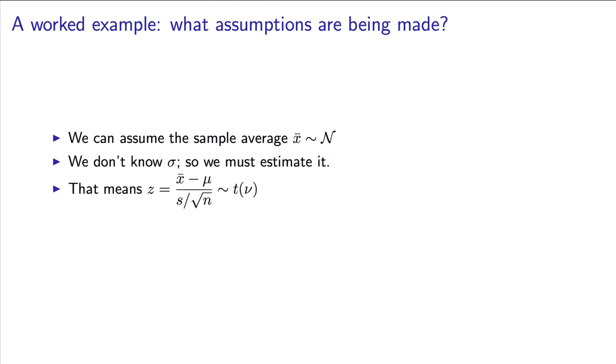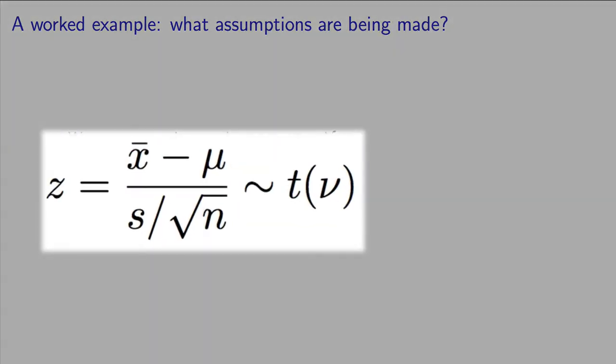And because we're using the sampled standard deviation, we know that z will be t-distributed. So the only way to calculate the confidence interval bounds is to use this t-distribution for z from the sample average.